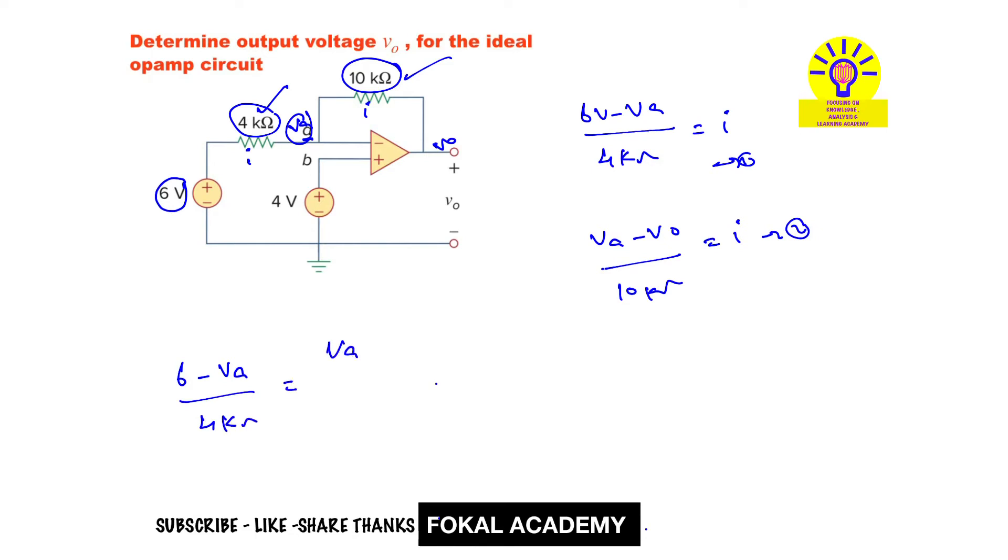What is the va value? For the ideal op-amp, va is always equal to vb, meaning for both terminals the input voltage is the same for the ideal op-amp.